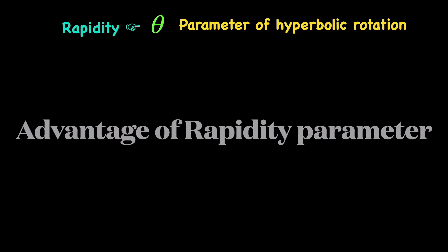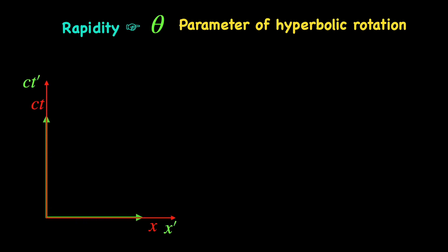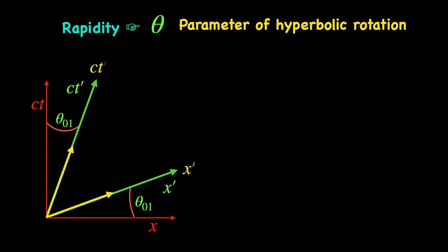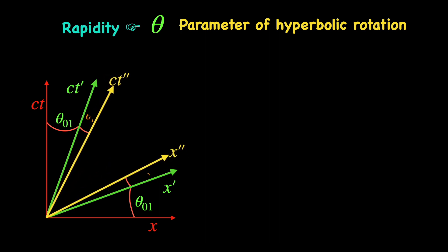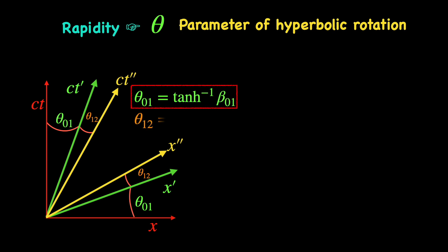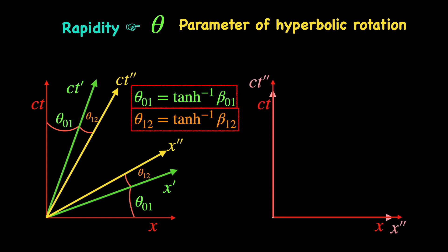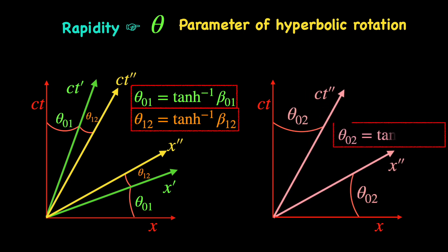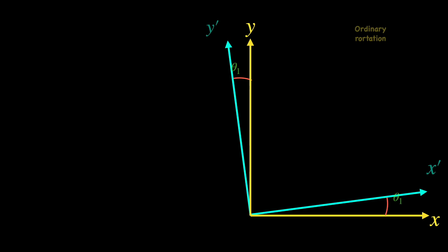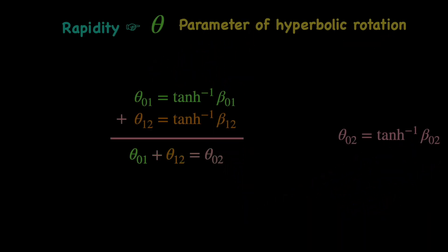There is one big advantage of considering the rapidity as the parameter of Lorentz transformation. Consider two consecutive Lorentz transformations both in the x-direction: from our rest frame S₀ to the prime frame S₁ moving at constant velocity β₀₁ with respect to S₀, and then from S₁ to a double prime frame S₂ moving with another constant velocity β₁₂ with respect to S₁. The corresponding rapidity parameters are θ₀₁ — the inverse tanh of β₀₁ — and θ₁₂. The composite transformation taking us directly from S₀ to S₂ has the rapidity parameter θ₀₂, which is simply the sum of θ₀₁ and θ₁₂. Like the angles of two successive ordinary rotations about the same axis, the rapidity parameters just add up.